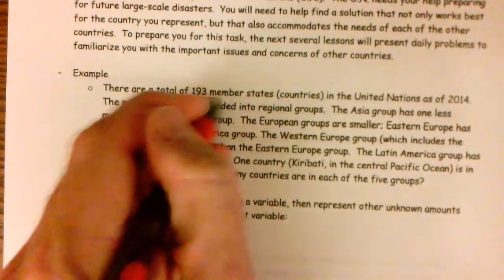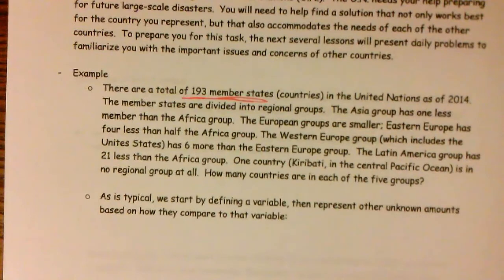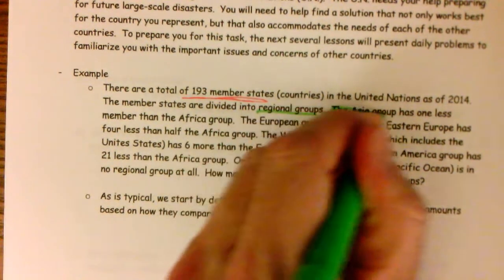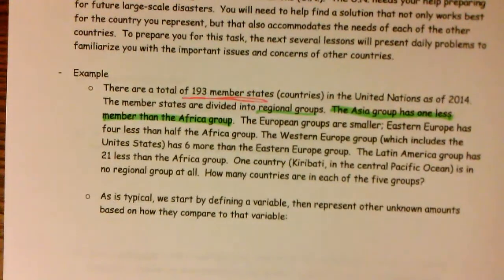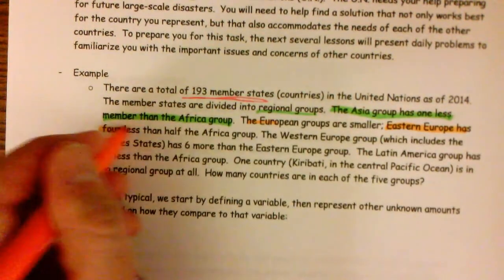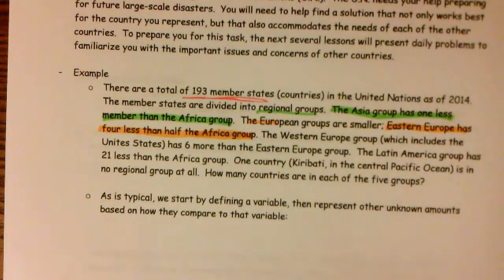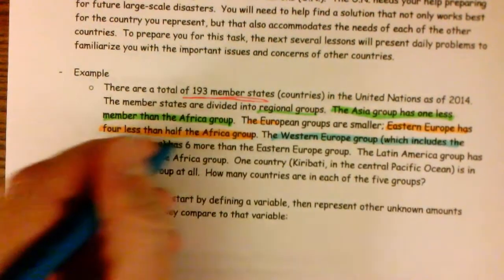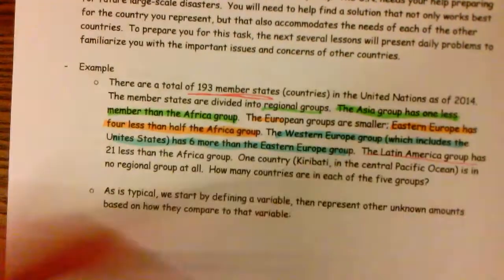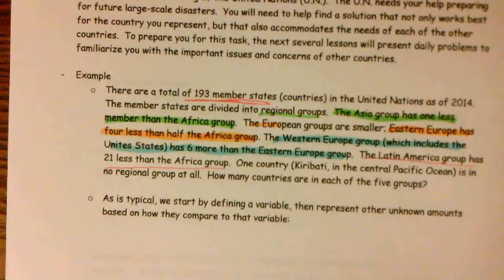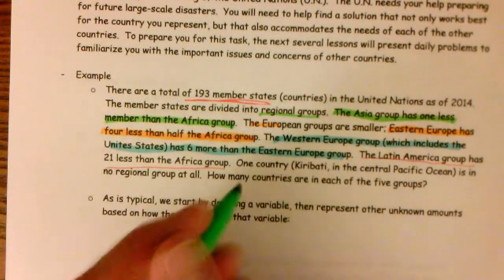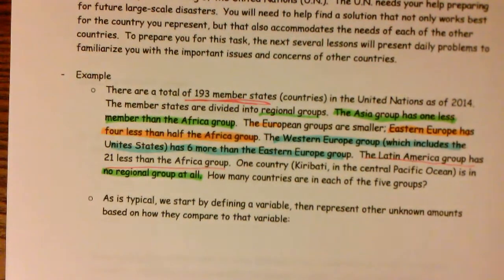There are a total of 193 member states of the United Nations as of 2014. The member states are divided into regional groups. Here comes the important part. The Asia group has one less member than the African group. The European groups are smaller. Eastern Europe has four less than half the African group. The Western group, which includes the United States, has six more than the Eastern Europe group. And then one country, Kiribati, I guess, in the Central Pacific Ocean, is in no region at all. How many countries are in each of the five groups?